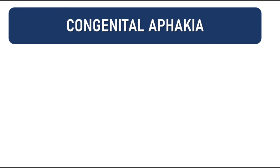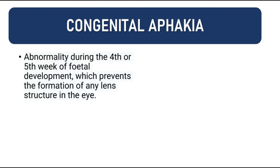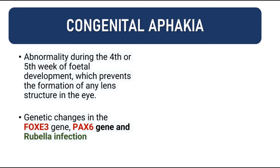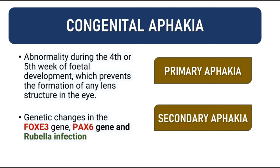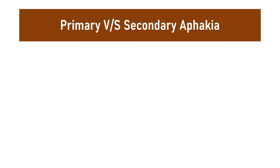The third type is congenital aphakia, meaning the lens is absent from birth. This abnormality develops during the fourth or fifth week of fetal development when lens development takes place. The genes involved are FOXE3 and PAX6. Rubella infection can also lead to congenital aphakia. Congenital aphakia can be of two types: primary congenital aphakia or secondary congenital aphakia.